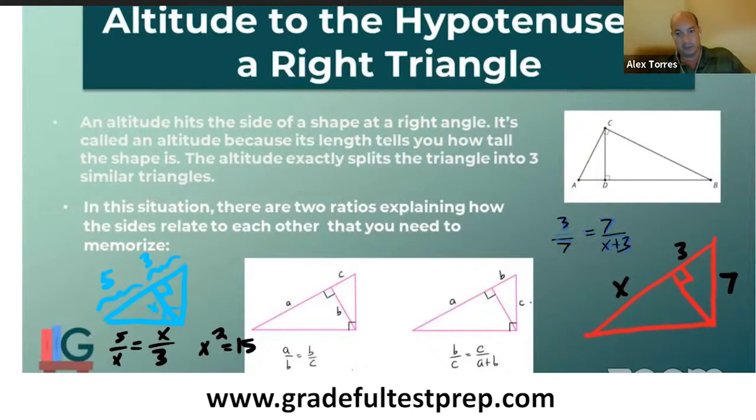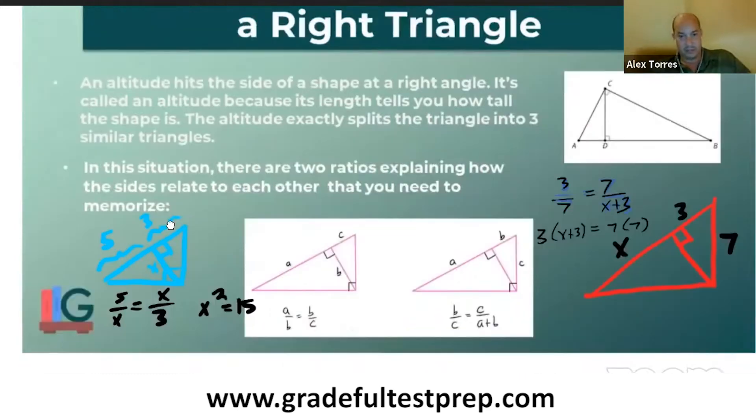So putting that into practice, that would be three over seven equals seven over X plus three. And from there, we could cross multiply and solve. So, three times X plus three equals seven times seven, which is 49. And from there, we would just solve for X. So it's a matter of having these two ratios memorized and being able to use them in different situations.